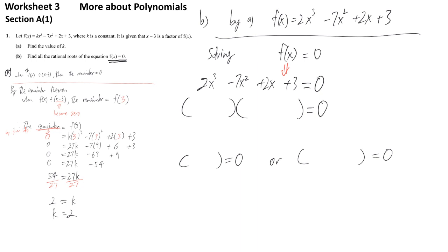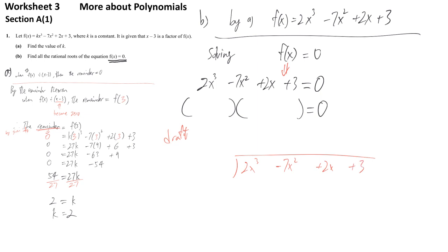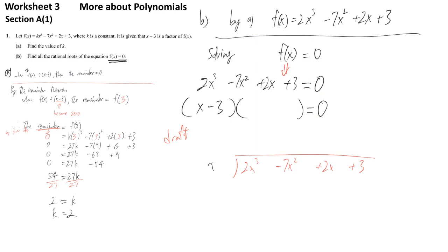We need to factorize 2x cubed minus 7x squared plus 2x plus 3. We already know one factor is x minus 3, because the question told us so. To find the other factor, we divide the polynomial by x minus 3 — just like dividing 12 by 3 to get 4. So in the draft work, we perform polynomial long division: divide 2x cubed by x to get 2x squared as the first term of the quotient.